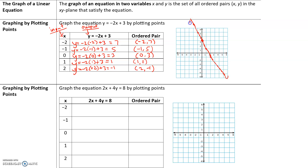Each line has arrows at the end indicating the line continues forever in each direction, so make sure that for every line you do put these arrows at the ends. The next equation is 2x + 4y = 8; we are given the inputs and we will do this one in class.